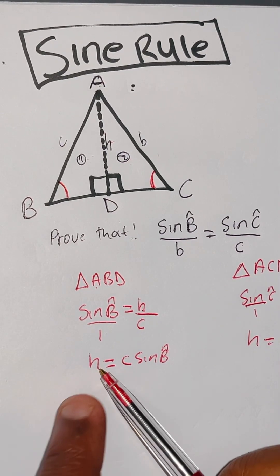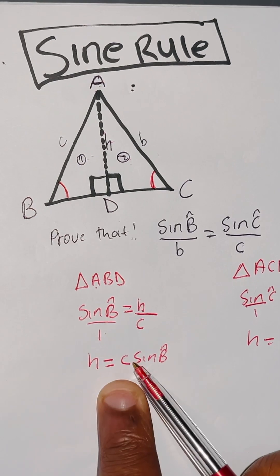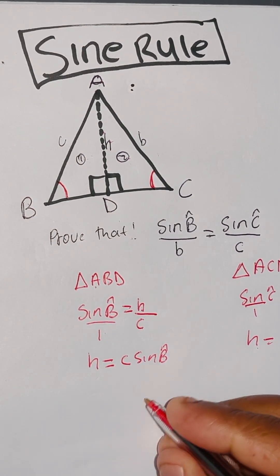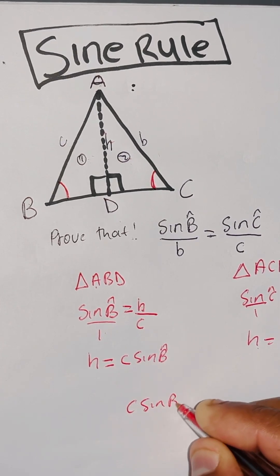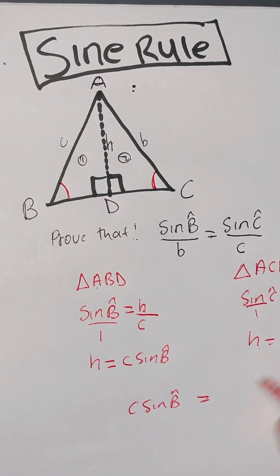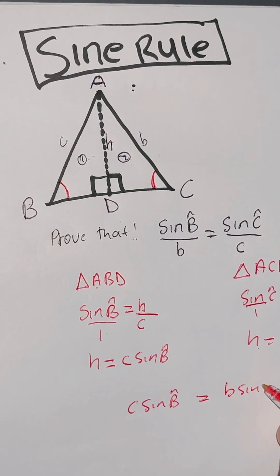So just because H equals H, it means that C sine angle B equals B sine angle C.